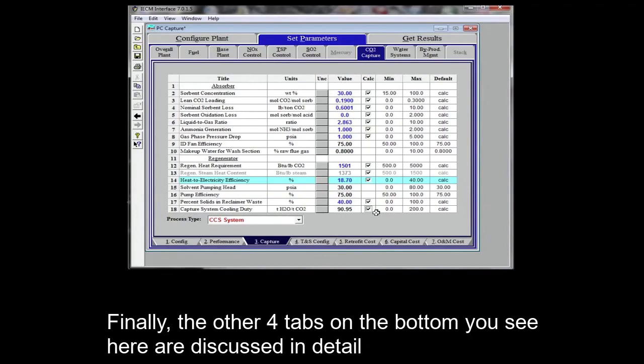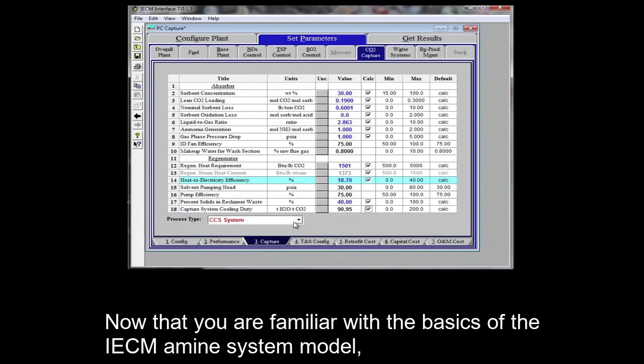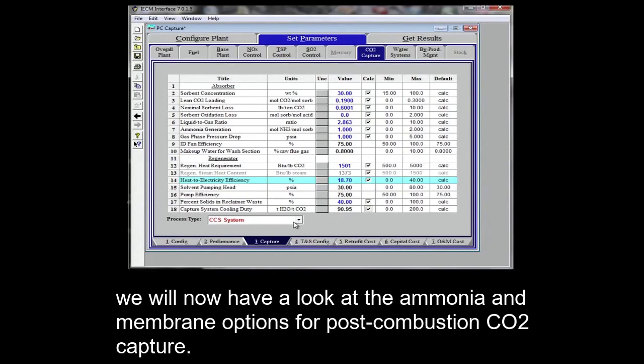Finally, the other four tabs on the bottom you see here are discussed in details in other tutorial videos, so we will not be reviewing them here. Now that you are familiar with the basics of IECM amine system model, we will now have a look at the ammonia and membrane options for post-combustion CO2 capture.